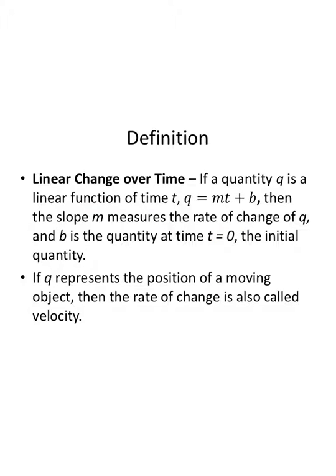A little quick linear change over time. We can do our quantity Q being a linear function of time. Our slope is quantity divided by time, so maybe miles per hour. M is speed. The slope M measures the rate of change of Q and B is the quantity at time zero, the initial quantity. If Q represents the position of a moving object, the rate of change is also called the velocity. Velocity in absolute value is called speed, but it's essentially the same thing. We don't have a lot of problems on this one, but linear change over time, linear changes, it all comes down to y equals mx plus b. And we'll just call the y and the x different things based on the situations we're modeling.